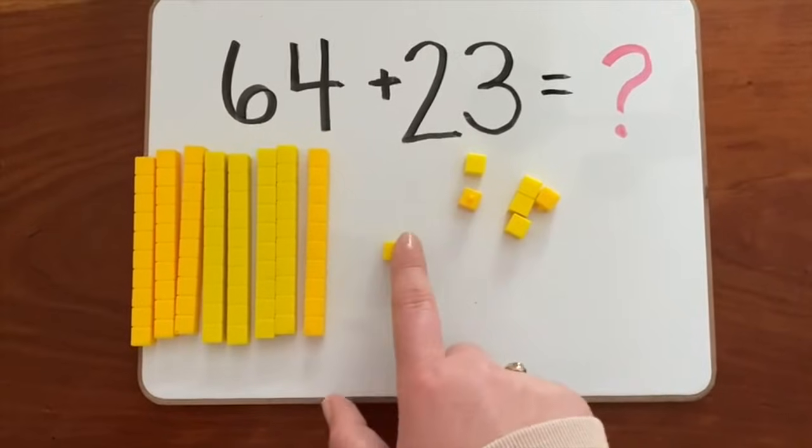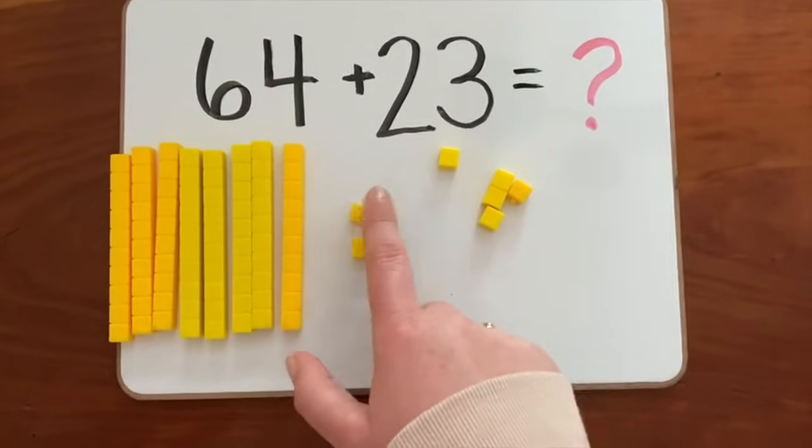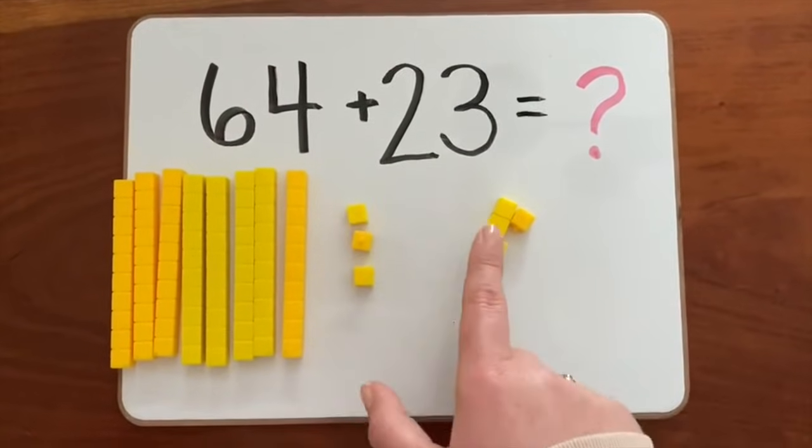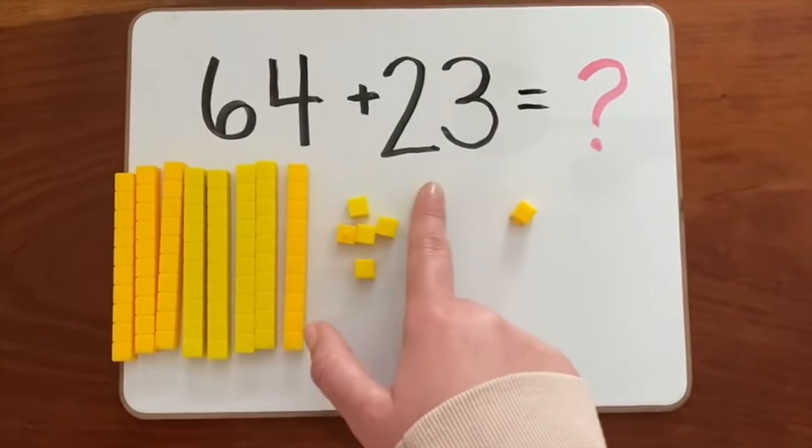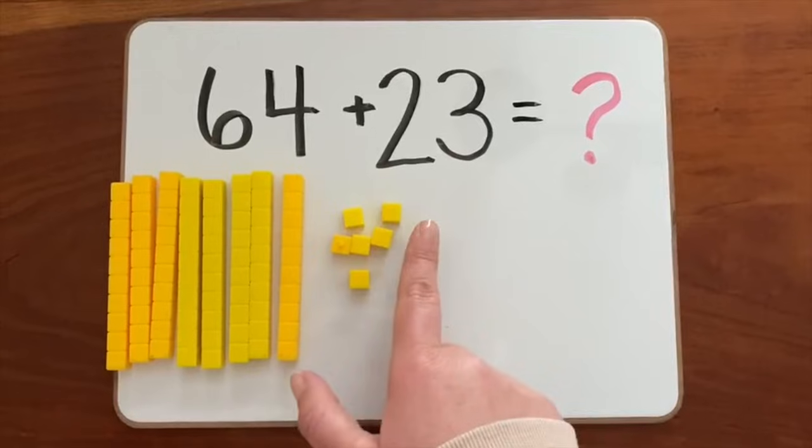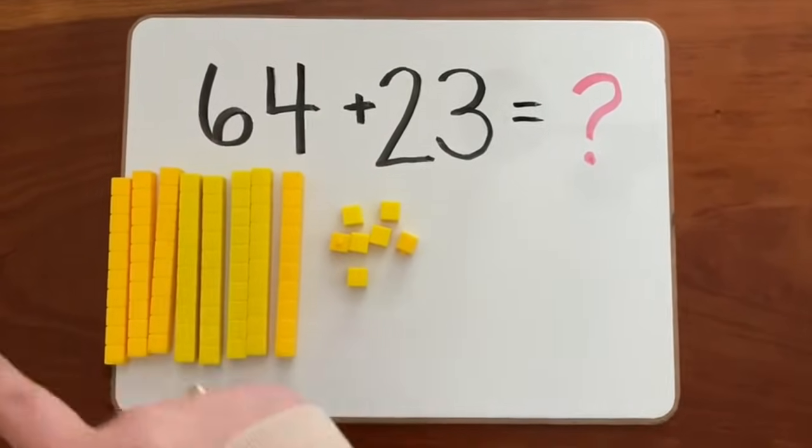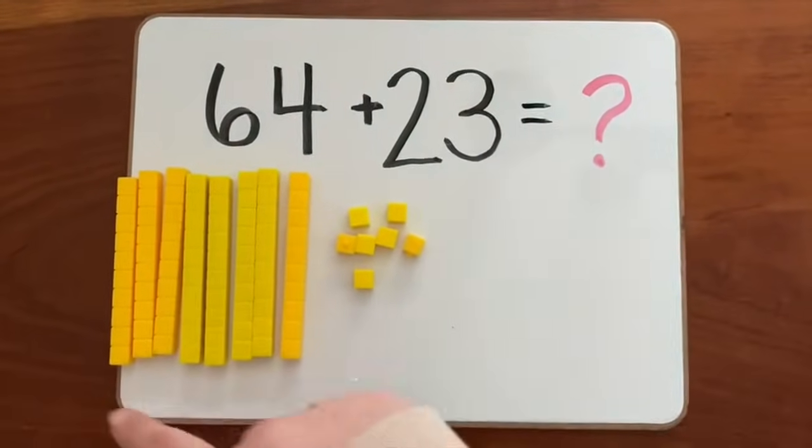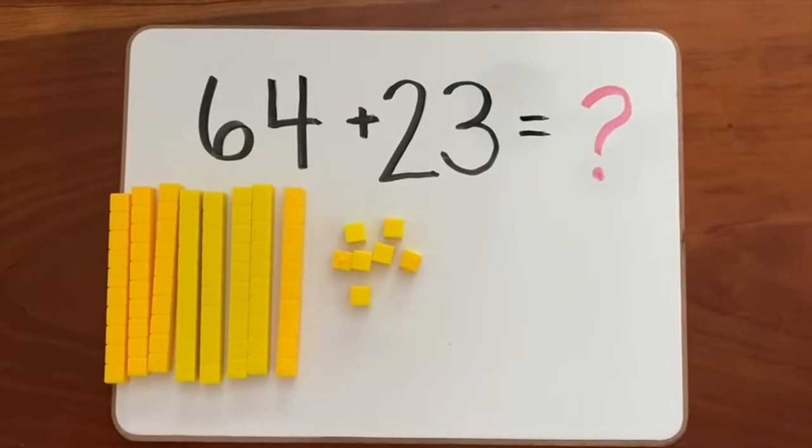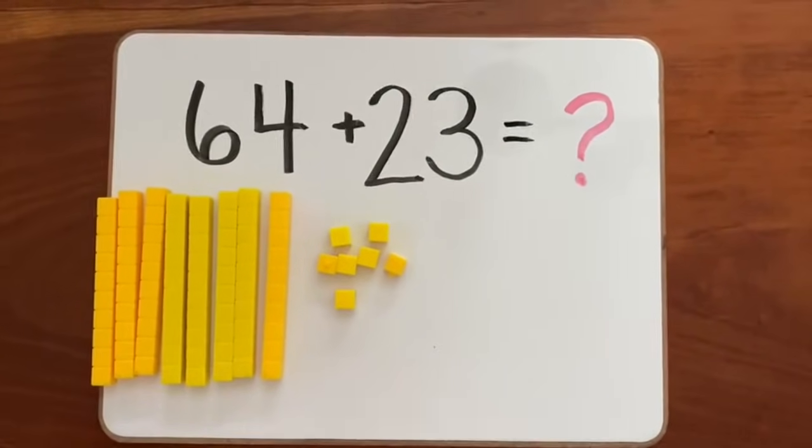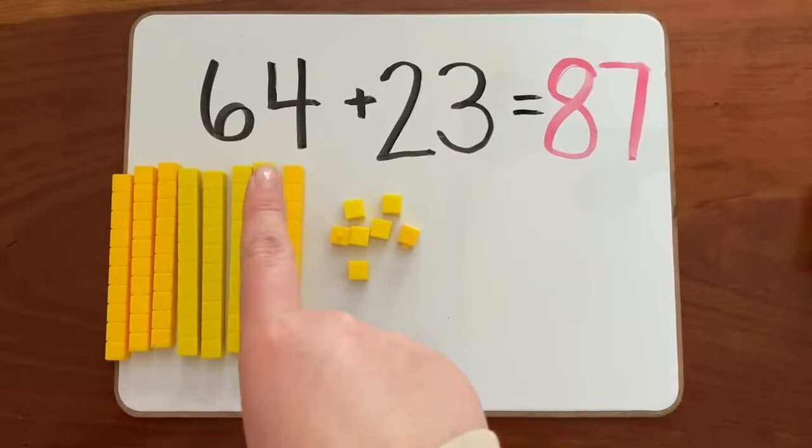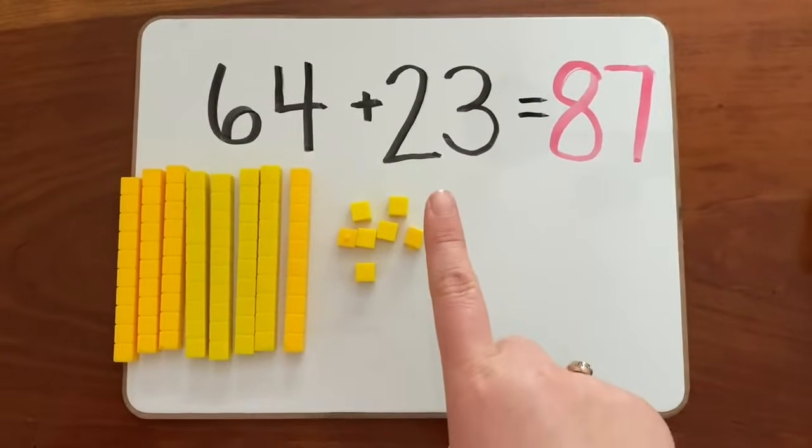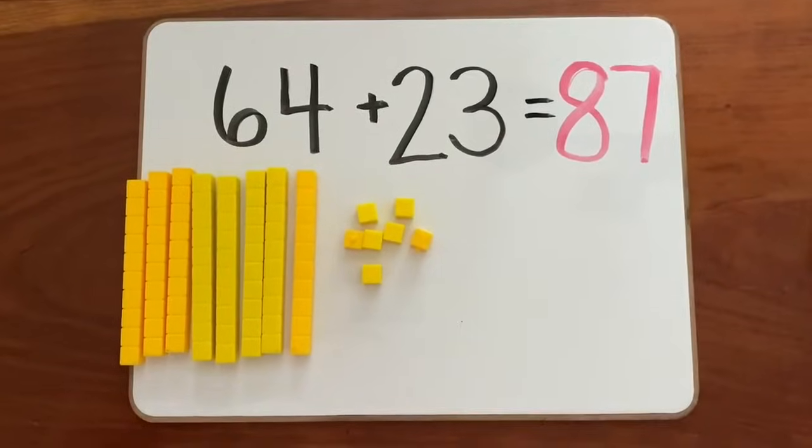Now count the cubes: 81, 82, 83, 84, 85, 86, 87. When we count all of our longs and cubes together, the number we came up with was 87. So now we know that 64 plus 23 equals 87.